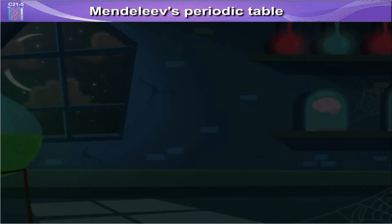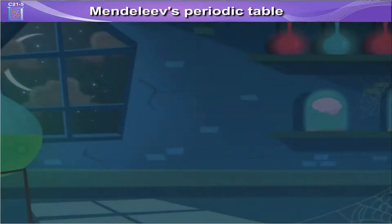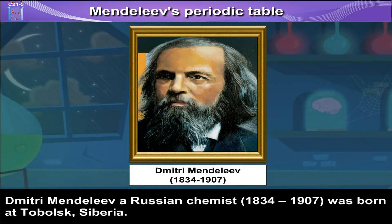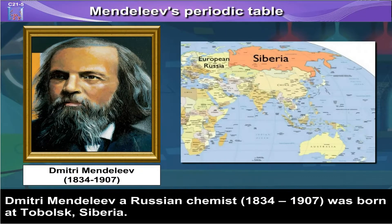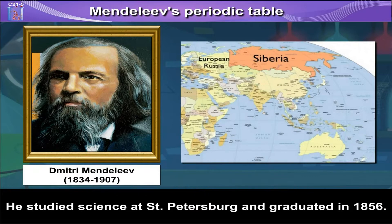Mendeleev's Periodic Table. Dmitry Mendeleev, a Russian chemist born in 1834 and died in 1907, was born at Tobolsk, Siberia. He studied science at St. Petersburg and graduated in 1856.